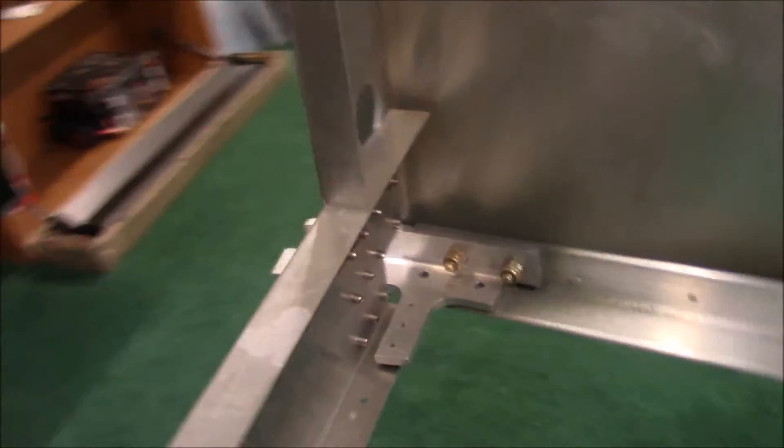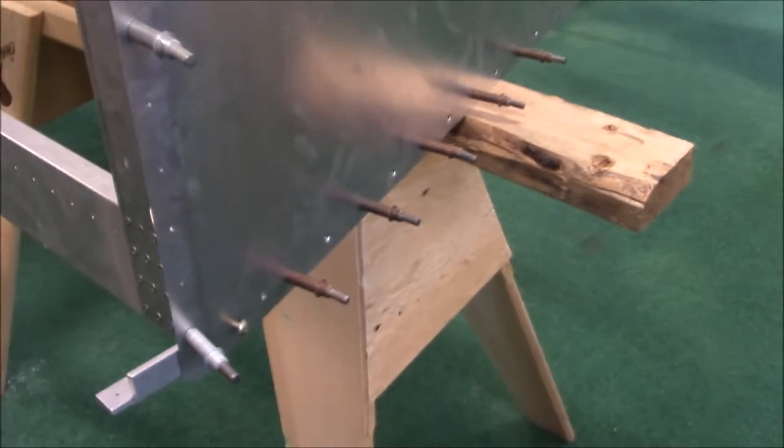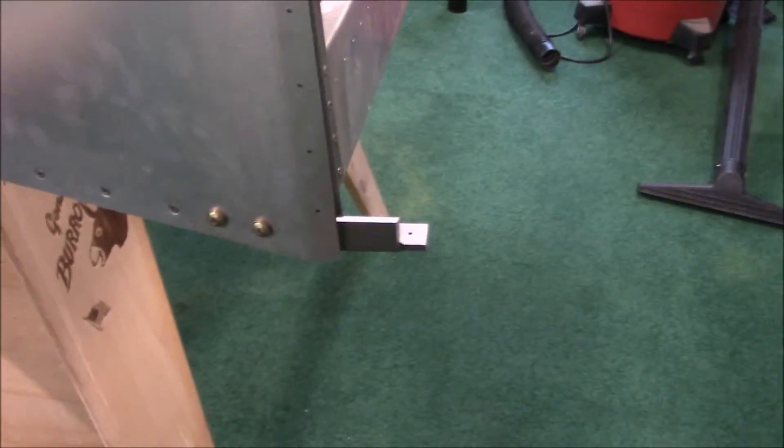Okay, I got those bolts in and torqued, and now I'm going to go back and pull the rivets on all of these, and then I'll go and do the same thing on this side. All right, the entire bottom row is now riveted. So I'm going to go work on the other side.